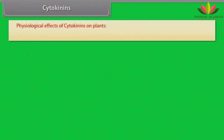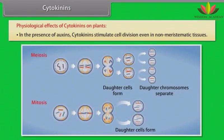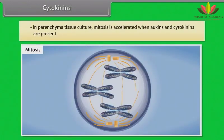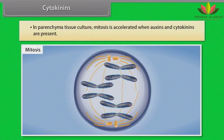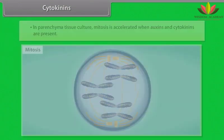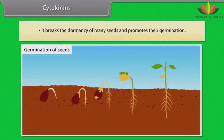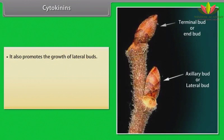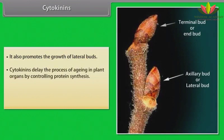Physiological effects of cytokinins: in the presence of auxins, cytokinins stimulate cell division even in non-meristematic tissues. In parenchyma tissue culture, mitosis is accelerated when auxins and cytokinins are present. Cytokinins break the dormancy of many seeds and promote their germination. They also promote the growth of lateral buds. Cytokinins delay the process of aging in plant organs by controlling protein synthesis. They also help in accumulation of solutes in plant cells.